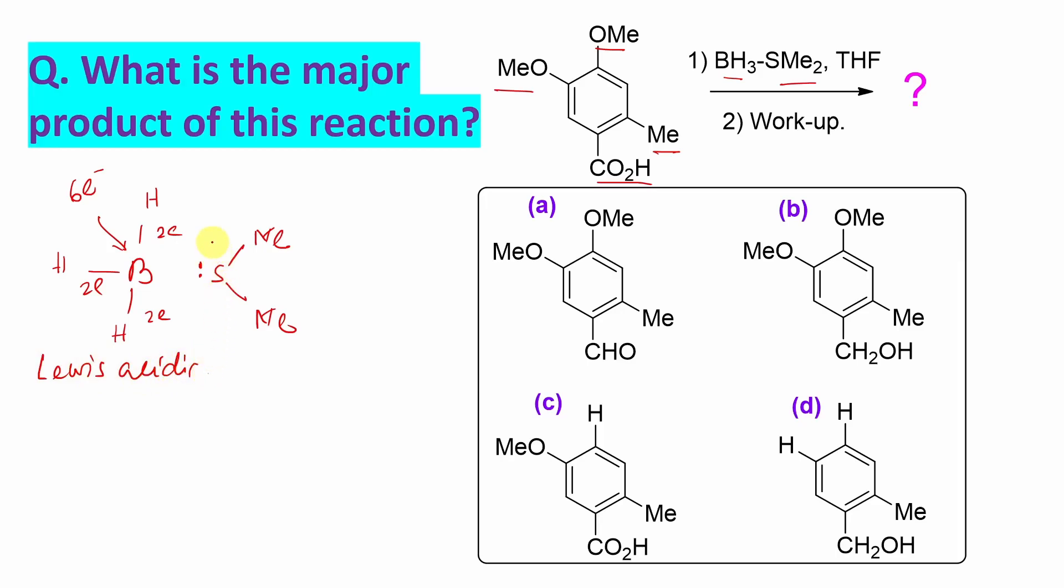And it gets attached via an adduct with this Lewis base, I mean this sulfur. So it donates its pair of electrons and forms this BH3·SMe2 adduct. So in this way, both stabilize. So that is actually the role of this SMe2. It stabilizes the reagent and THF is the solvent here. Now this we understand. But basically boron, or BH3, is actually Lewis acidic in nature.